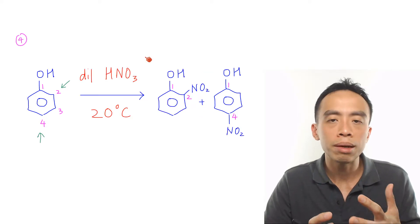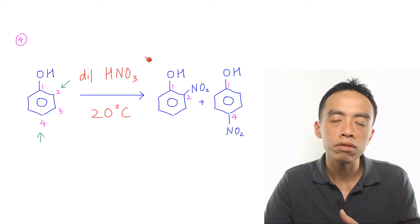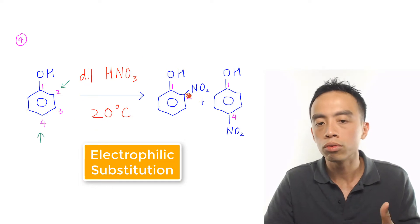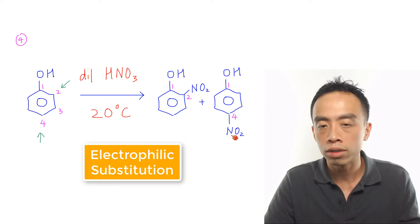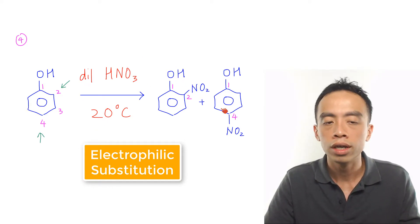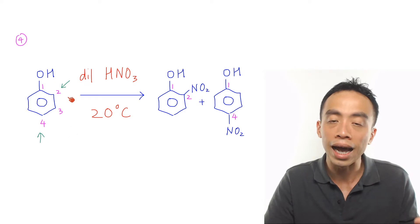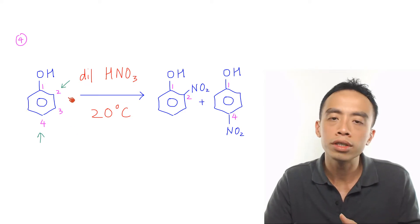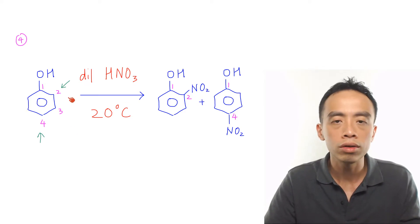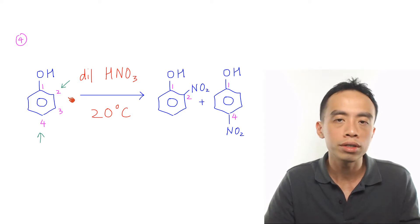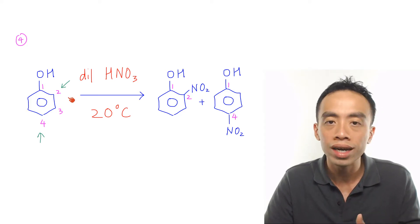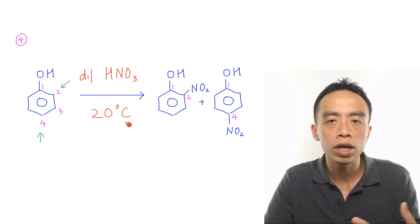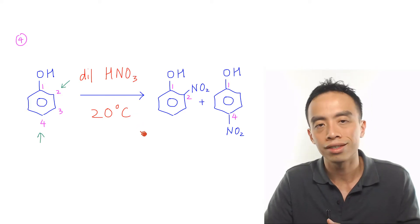Major reaction number 4 involving phenol is the nitration of phenol to form 2-nitrophenol or 4-nitrophenol. Because the OH group is a highly activating group, the electrophilic substitution of phenol does not require concentrated H2SO4 as a catalyst. This is simply done using dilute HNO3 at 20 degrees Celsius.